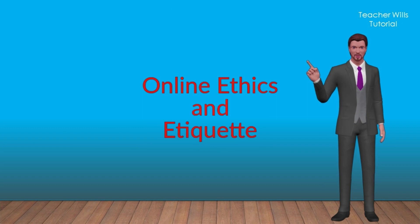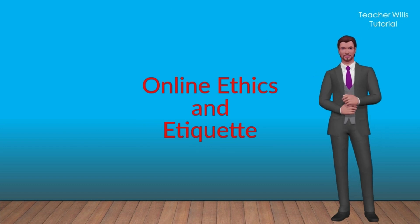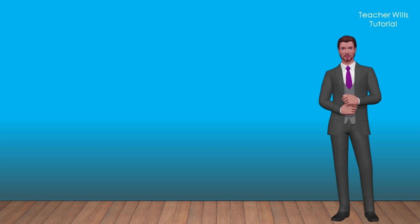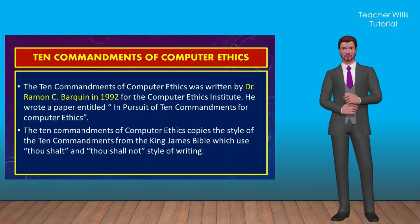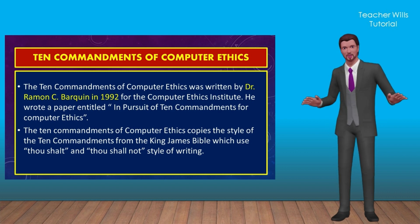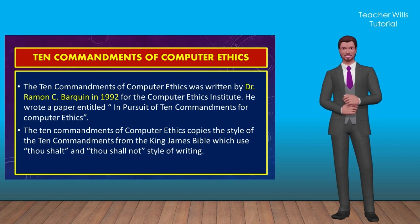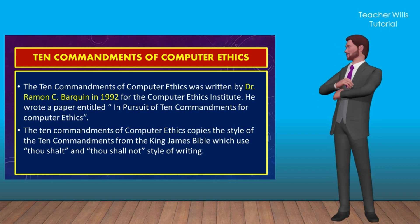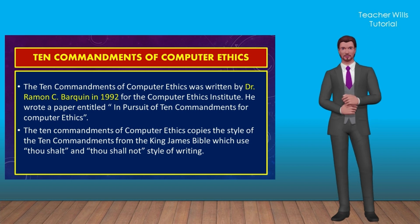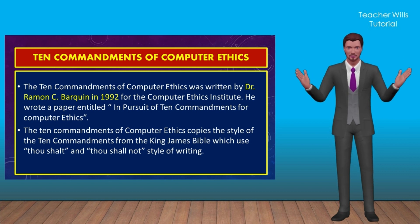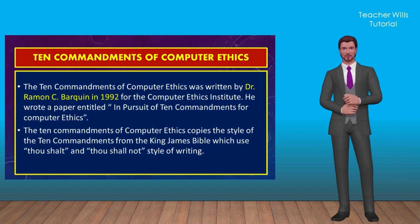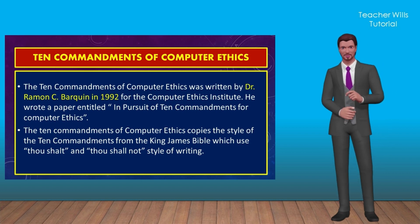The last topic is online ethics and etiquette. Guidelines and rules are needed in the appropriate use of computer technology. There are both advantages and disadvantages in the use of computers. The Ten Commandments of Computer Ethics is meant as a guide to the right attitude when using a computer. It was written by Dr. Ramon C. Barquin in 1992 for the Computer Ethics Institute. He wrote a paper entitled, In Pursuit of Ten Commandments for Computer Ethics. The Ten Commandments of Computer Ethics copied the style of the Ten Commandments from the King James Bible, which used the 'Thou shalt' and 'Thou shalt not' style of writing.